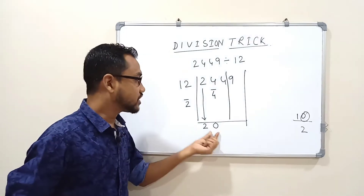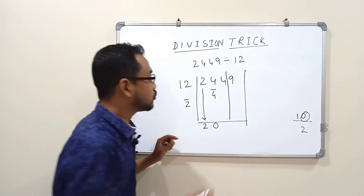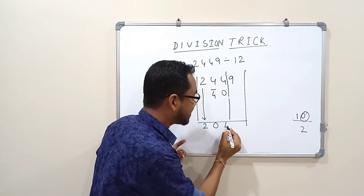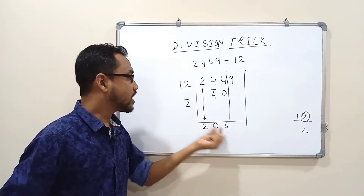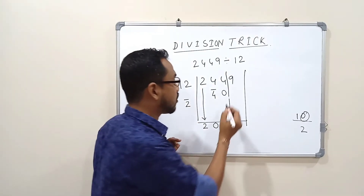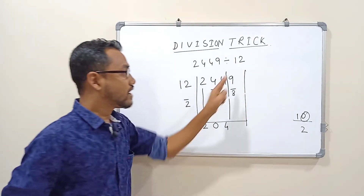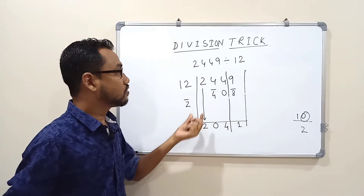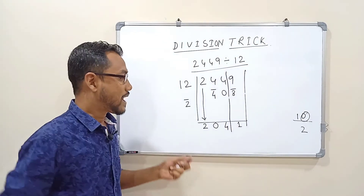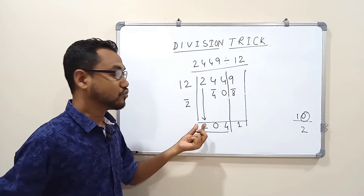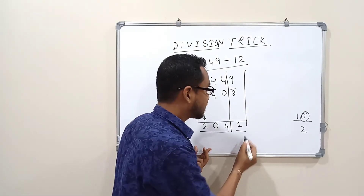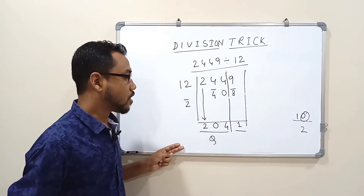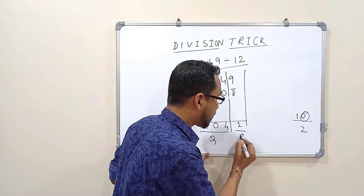We will do this: 0 into minus 2 is 0. So 4 minus 0 is 4. 4 into minus 2 is minus 8. So 9 minus 8 is 1. It will be 1 remainder. The quotient is 204 and remainder is 1.